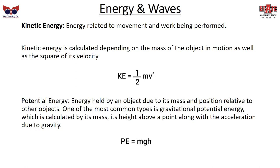Potential energy is energy held in an object due to its mass and position relative to other objects. The most typical kind is gravitational potential energy, calculated using mass, height above a reference point, and the acceleration due to gravity. A rock on top of a cliff has potential energy — it wants to fall. The cliff resists it, but when the rock falls off, that potential energy transforms into kinetic energy.